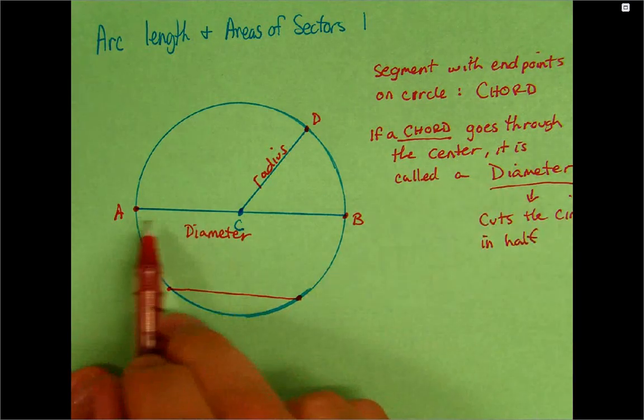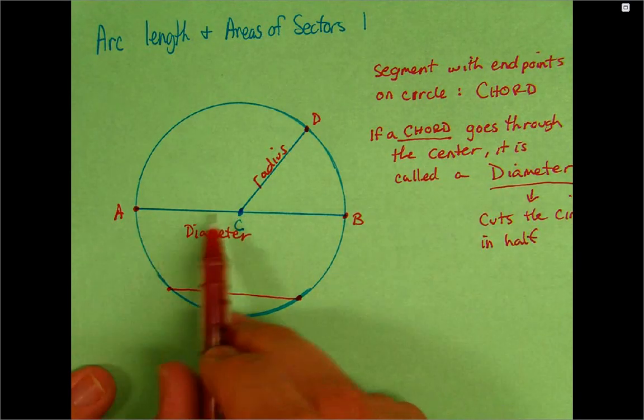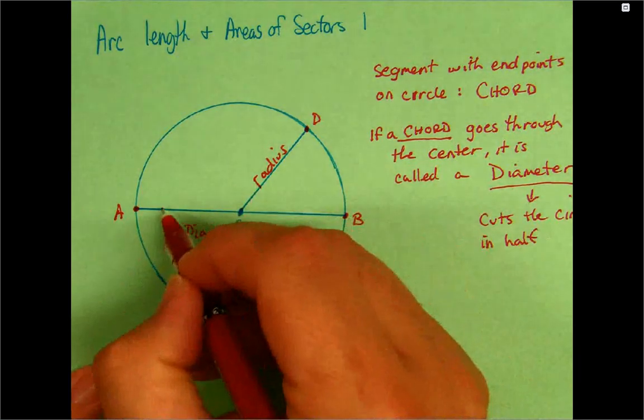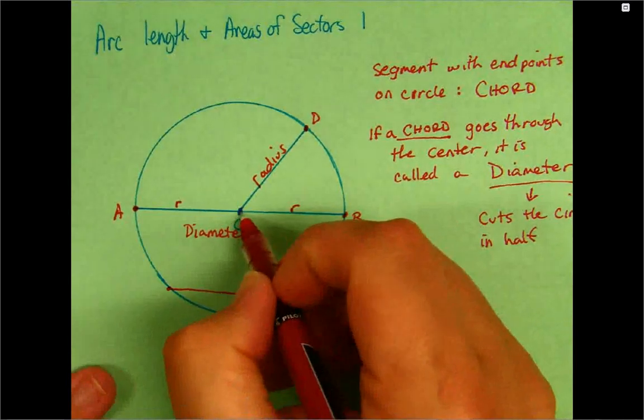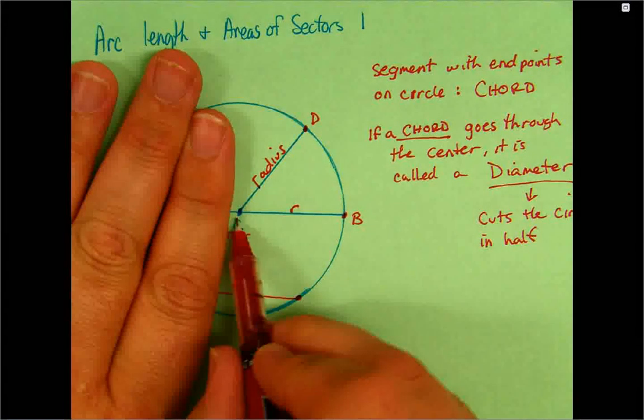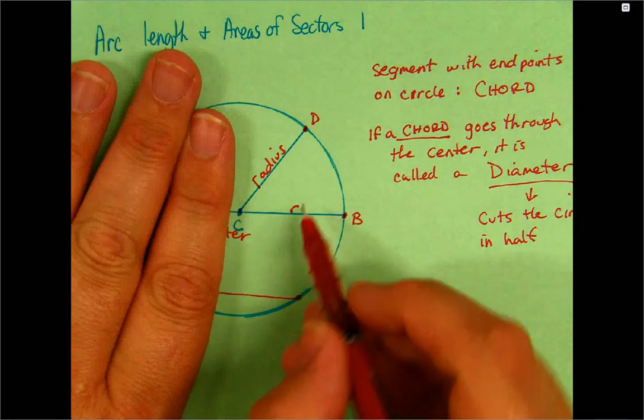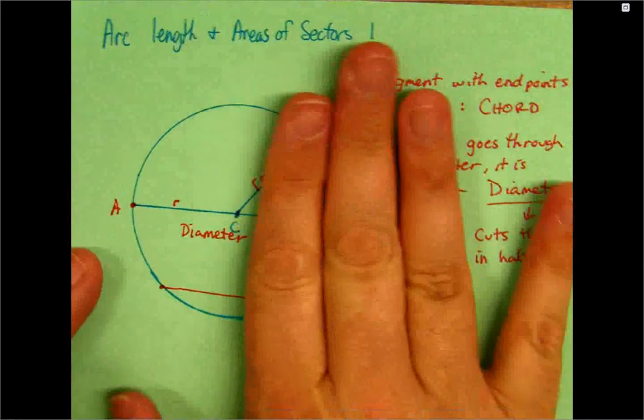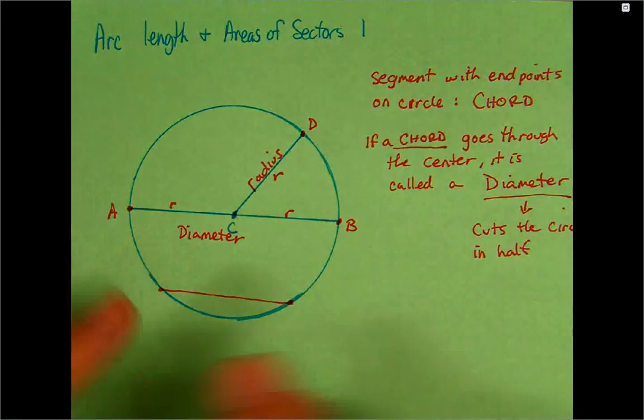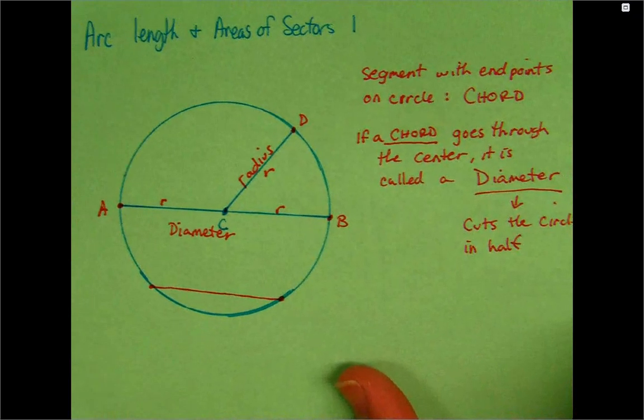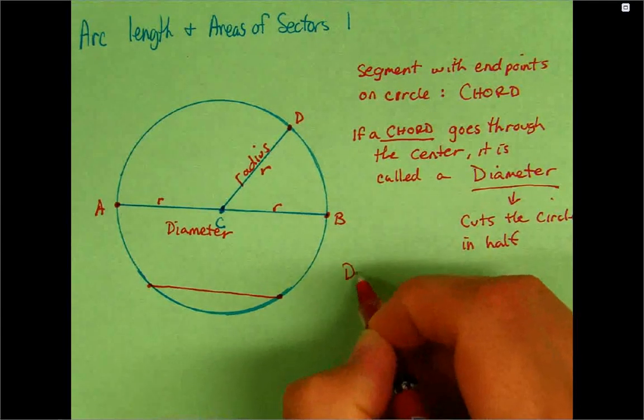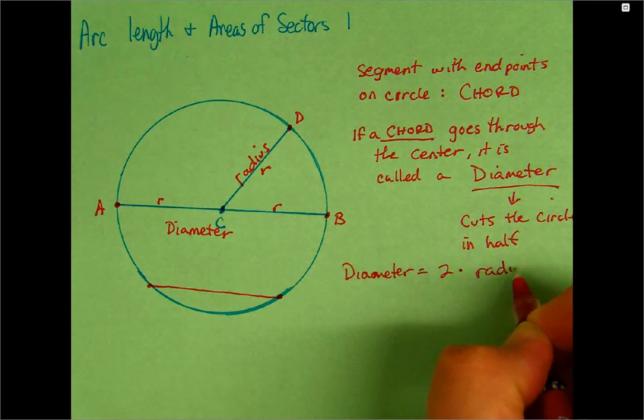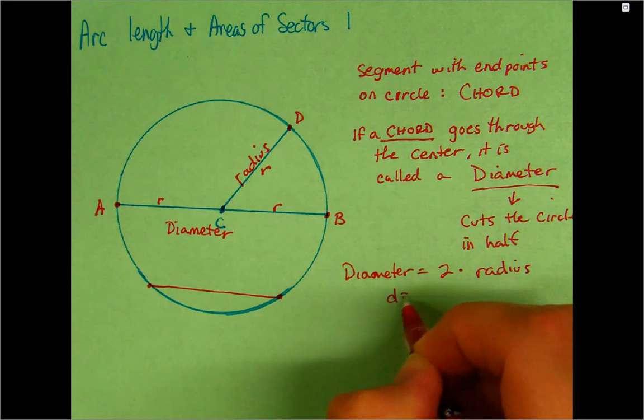If the chord contains the center, then it cuts a circle in half. But also, since we have the center, if we just go from this center to this point, that's a radius. If we go from the center to that point A, that's a radius. So, how many radiuses make up a diameter? Two. So, diameter is equal to two times the radius.